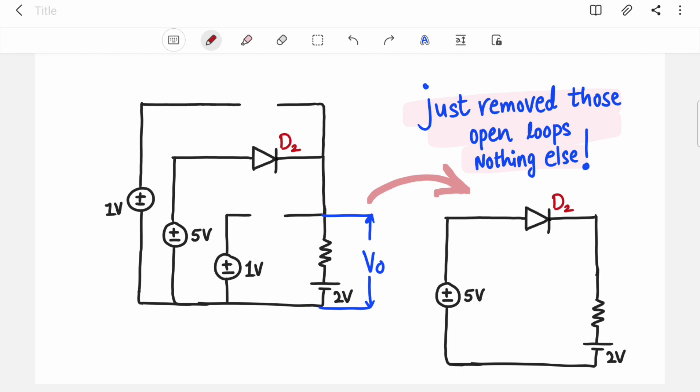Now I have just removed this open loops. So D1 was open circuit, D3 was open circuit, I just removed those branches. Now only D2 is in the picture. So there is only one loop, this is the loop. Other are open loops, so we discarded it.